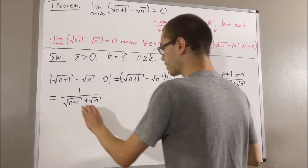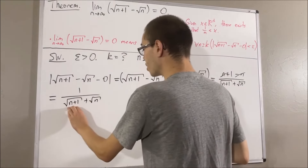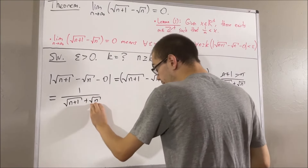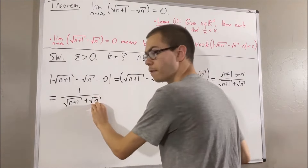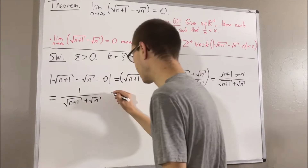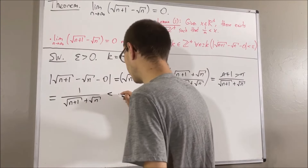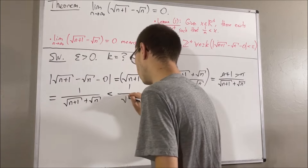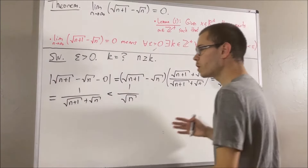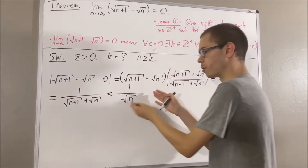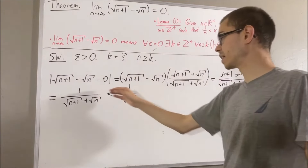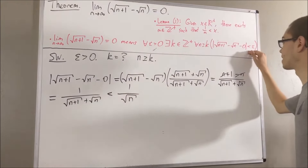From here, since square root of n plus 1 plus square root of n is greater than the square root of n, we take the reciprocal of both sides. This gives us that we are less than 1 over the square root of n. So we have reduced this to something that looks pretty simple, and remember we still want to make this less than epsilon.